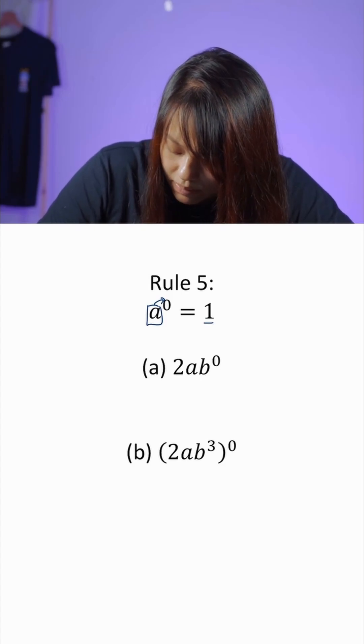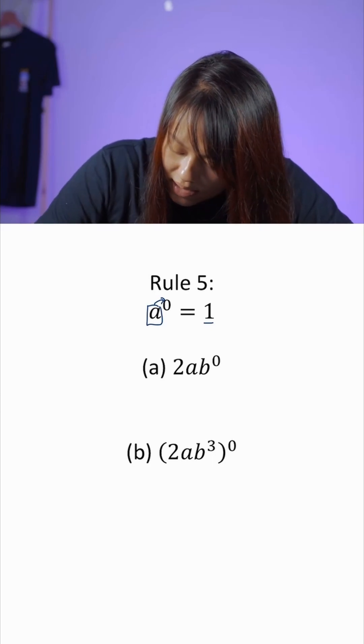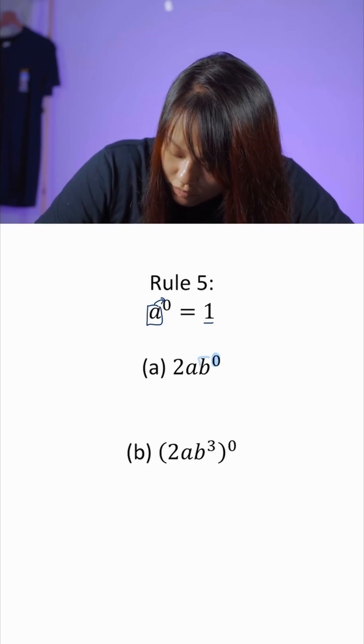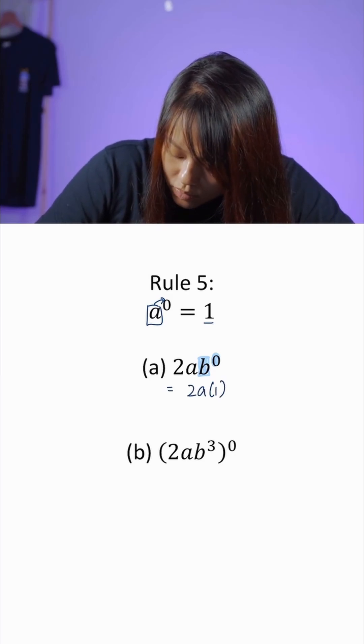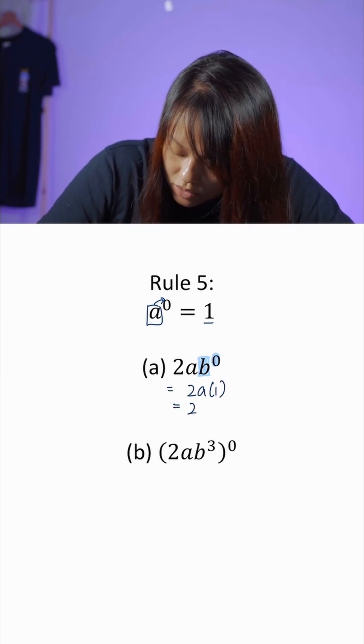Let's look at the first example. We have 2ab^0. We can see that this power is only for b. Therefore only b will become 1. The rest stays the same, so we'll get 2a.